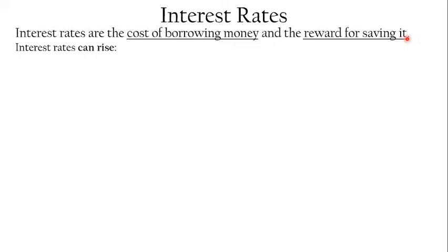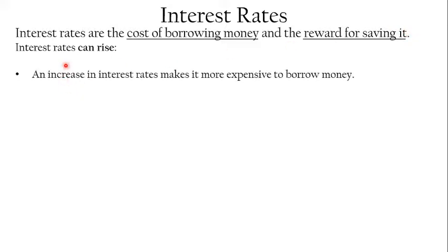Interest rates can go up and down, and the Bank of England uses them to affect the economy. An increase in the interest rate makes it more expensive to borrow money. For example, borrowing a hundred pounds at five percent means paying back one hundred and five pounds. If the interest rate rises from five to ten percent, the cost of borrowing goes up — you pay back the hundred pounds plus ten pounds interest.